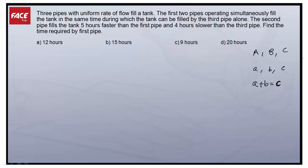The second pipe fills the tank five hours faster than the first pipe and four hours slower than the third pipe. Find the time required by the first pipe.